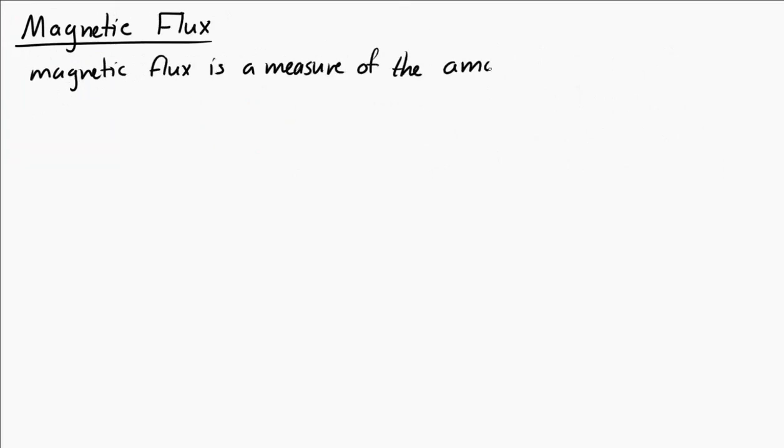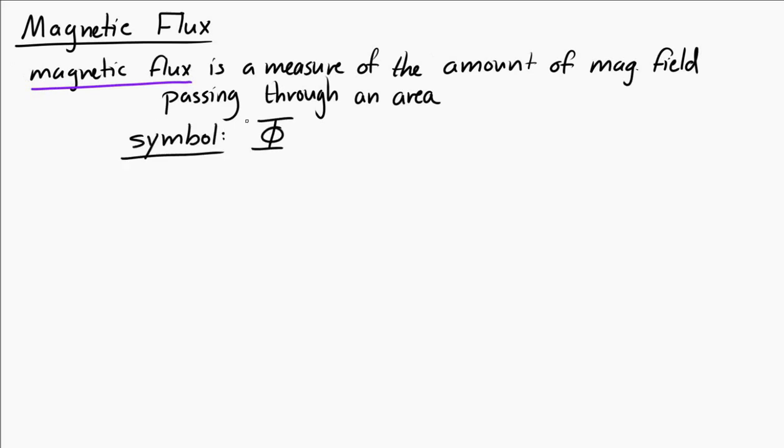The next topic we're going to look at is magnetic flux. Magnetic flux is a measure of the amount of magnetic field passing through an area. The symbol we use to represent magnetic flux is a capital Phi. And we have an equation: Phi equals BA cosine theta.